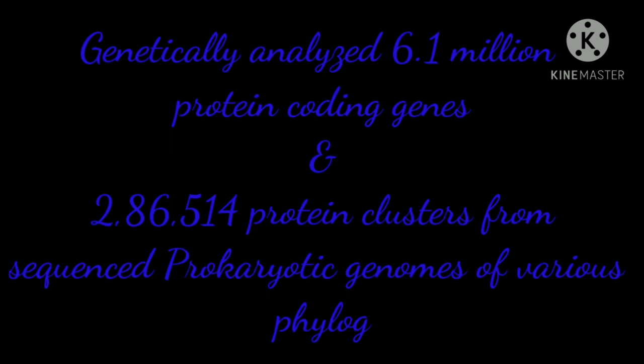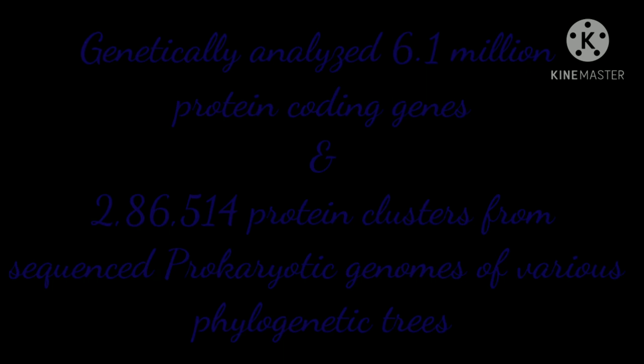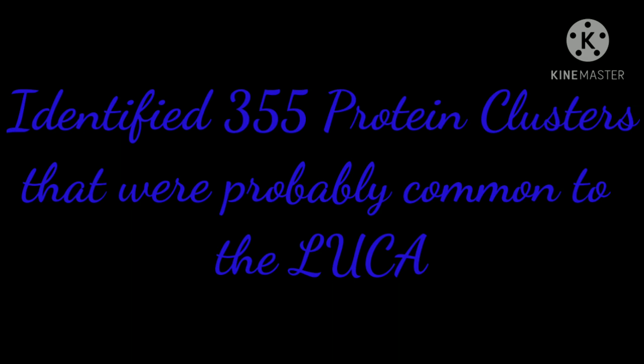William F. Martin genetically analyzed 6.1 million protein-coding genes and 286,514 protein clusters from sequenced prokaryotic genomes of various phylogenetic trees, and identified 355 protein clusters that were probably common to the last universal common ancestor.